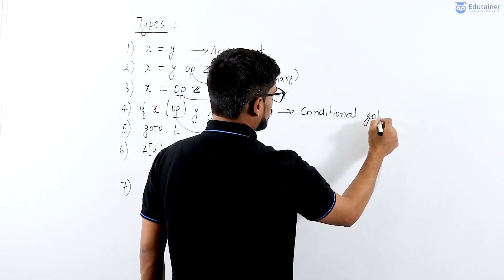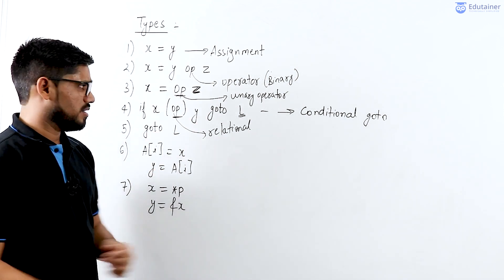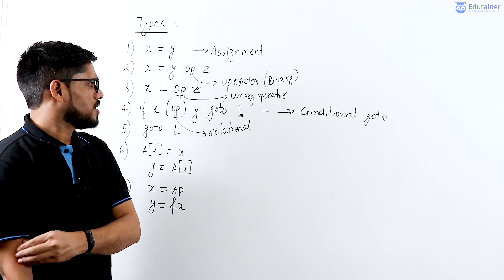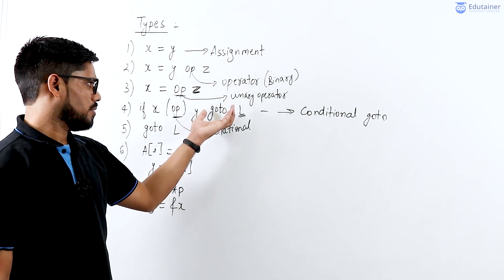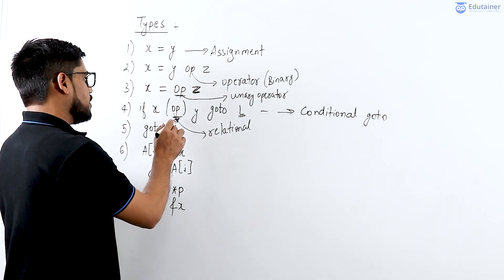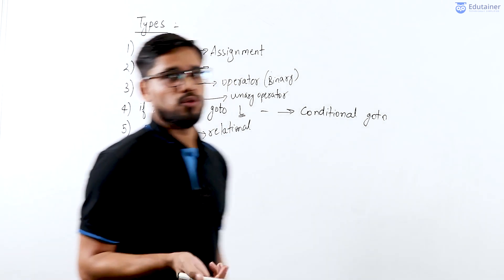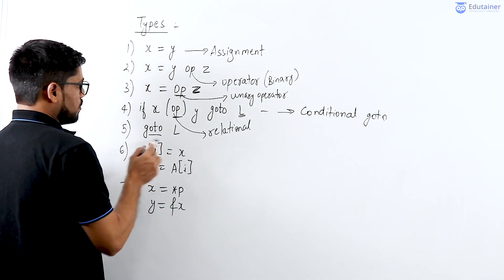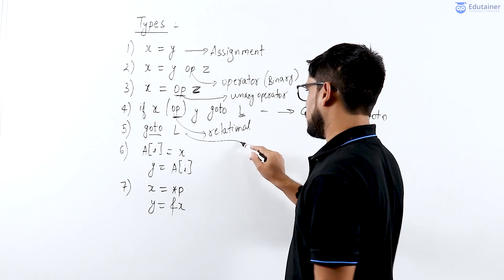Nowadays we don't use goto in most programming languages. In early days, C used goto statements, but now we use other constructs in its place. The idea is that if you have some condition, then based on the condition you move to any line of code in a program. The fifth operation is the unconditional goto — without any condition we can jump to any line of code in a program.